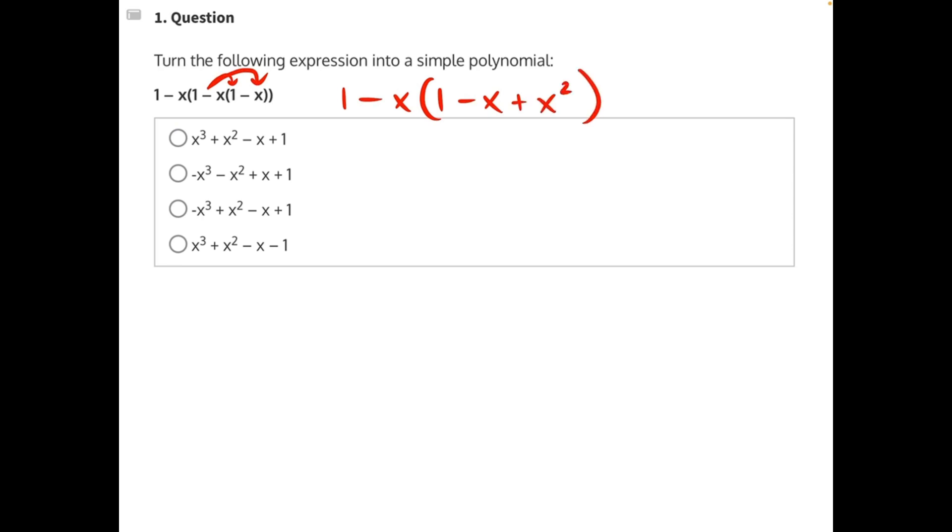Now we can distribute the next negative x into this set of parentheses. Negative x times 1 would be a negative x. Negative x times negative x would be positive x squared. And negative x times positive x squared would be a negative x cubed.